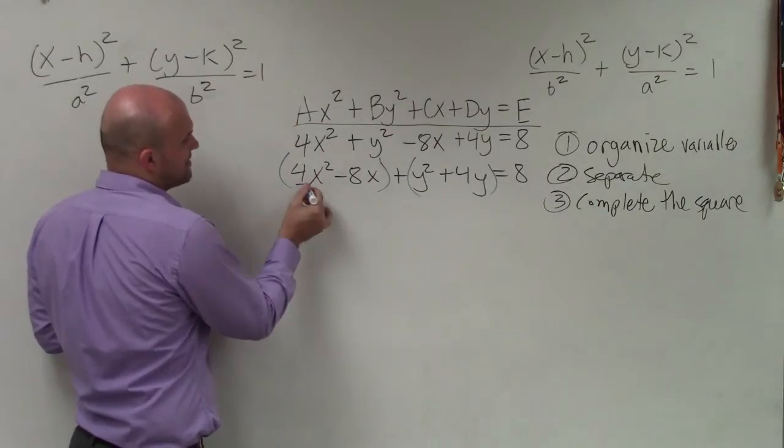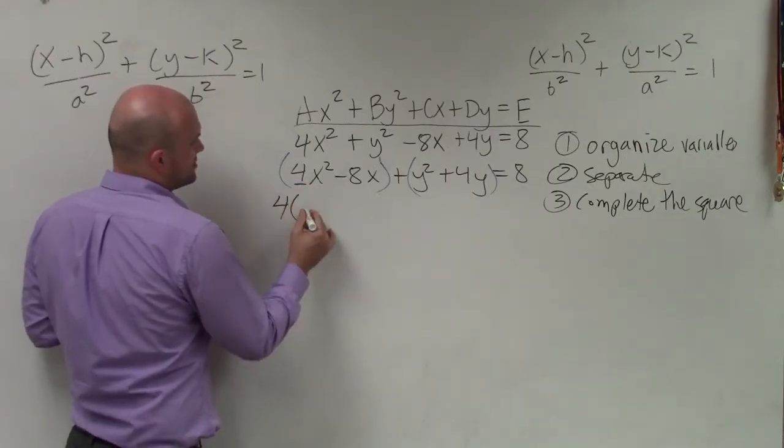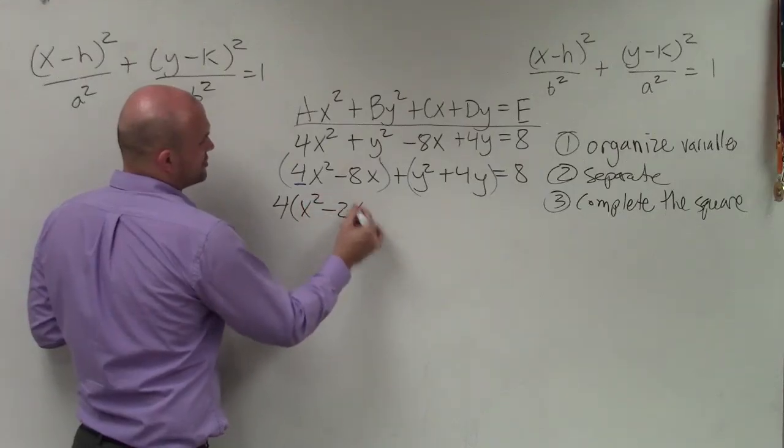So to first do this, I always got to make sure that this value is 1. So the first thing I'm going to do is actually factor out a 4, so then I'm left with x² - 2x.